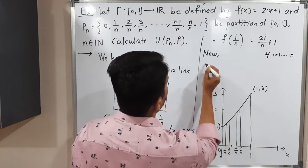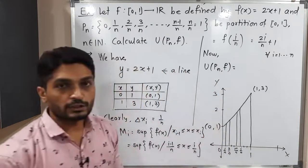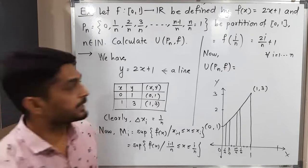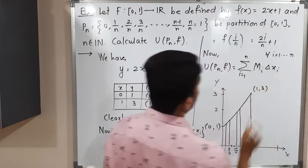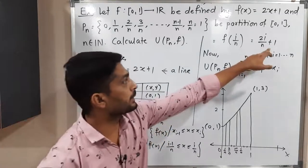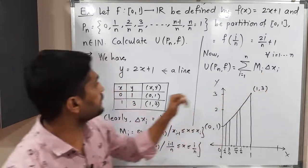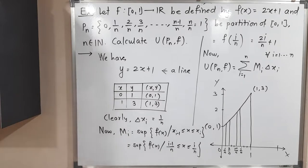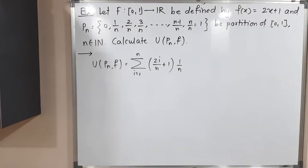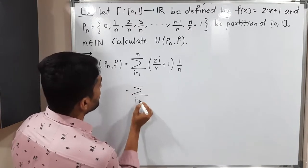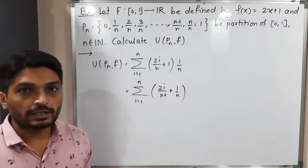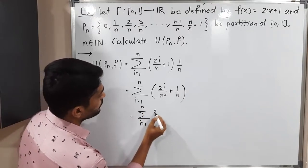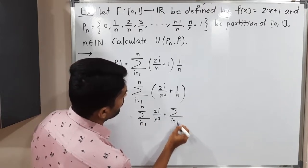Now we find the upper sum U(pn, f). By definition, U(pn, f) = Σ Mᵢ·Δxᵢ for i from 1 to n. Substituting Mᵢ = 2i/n + 1 and Δxᵢ = 1/n, we get Σ (2i/n + 1)·(1/n). Solving the bracket gives Σ (2i/n² + 1/n). We can split this into two separate summations: Σ 2i/n² + Σ 1/n.